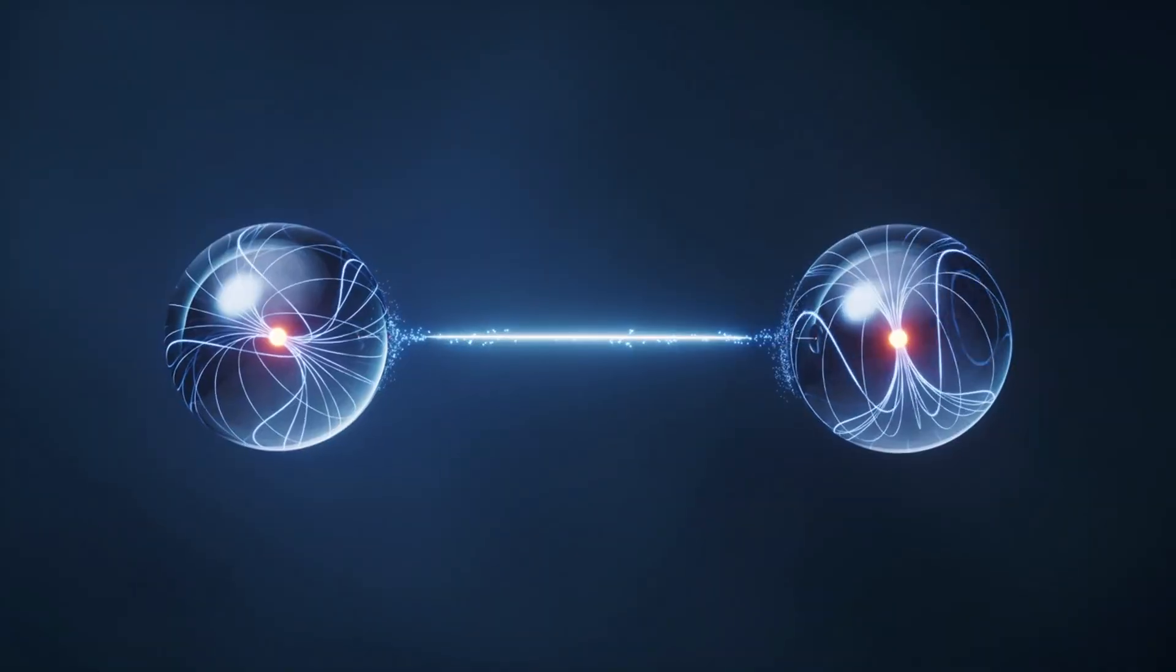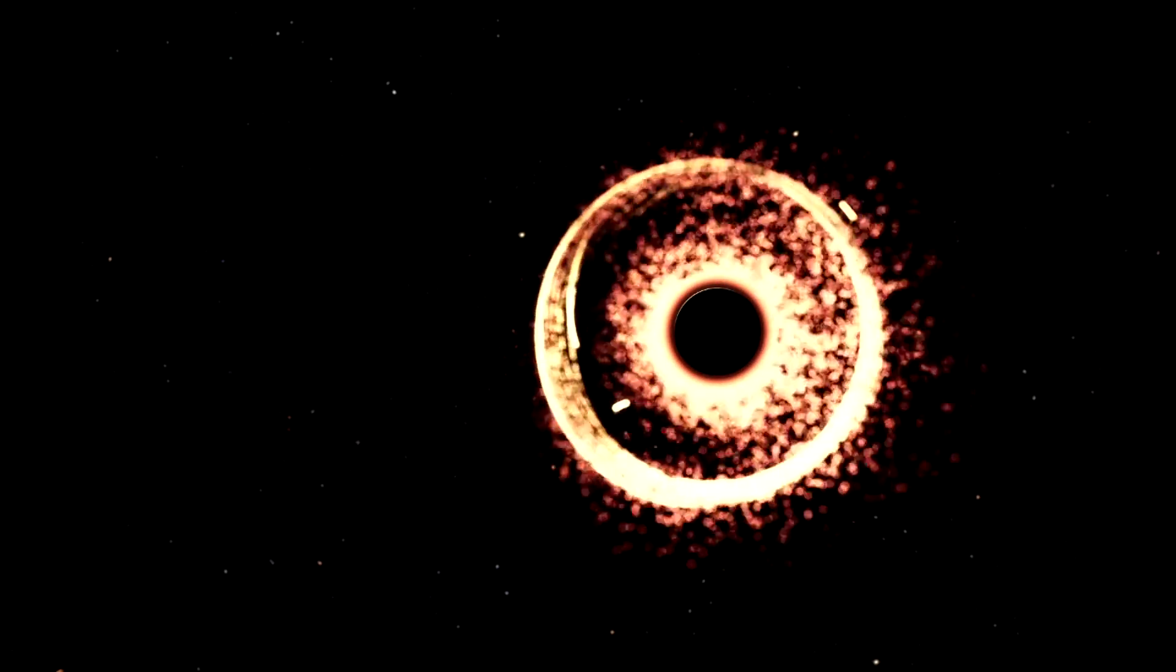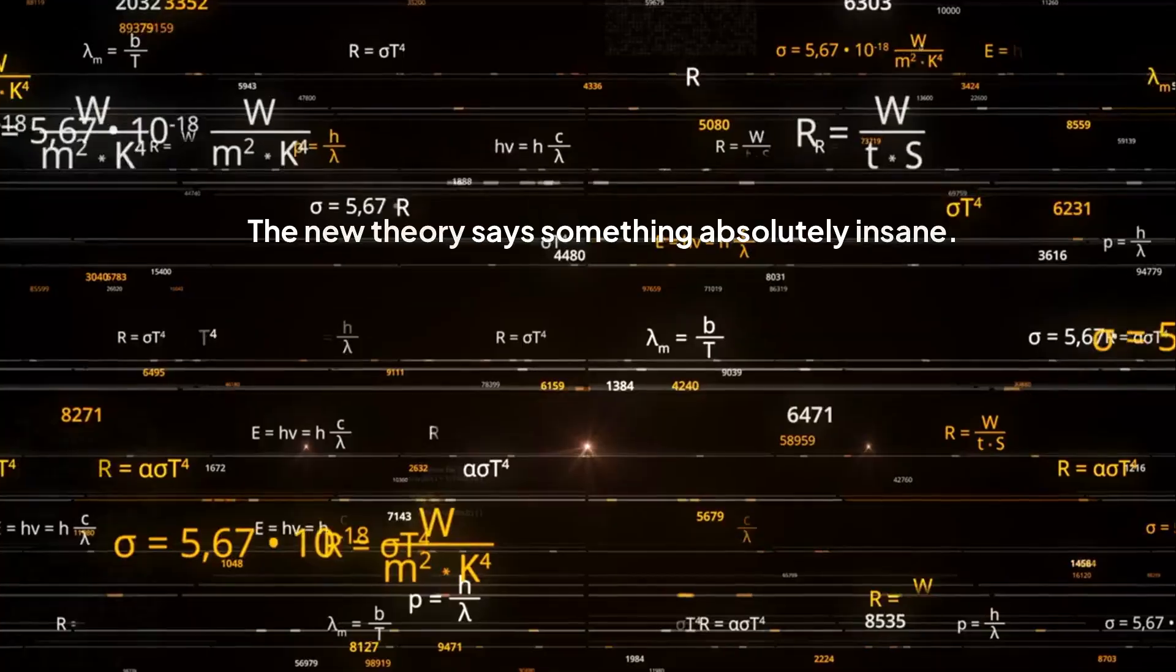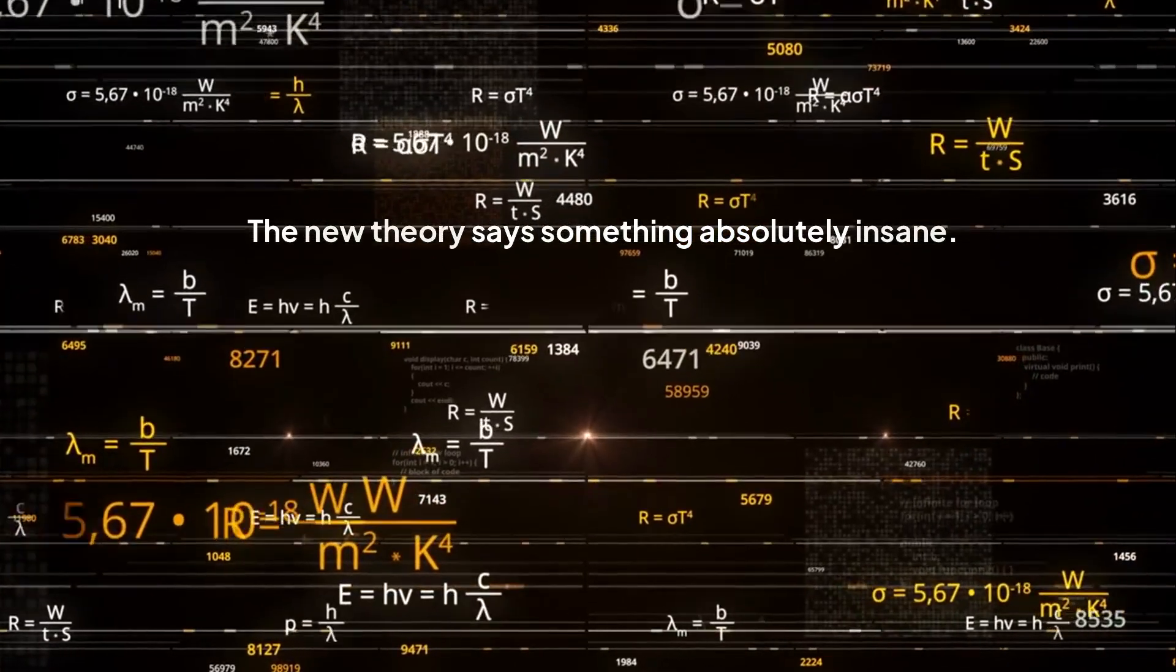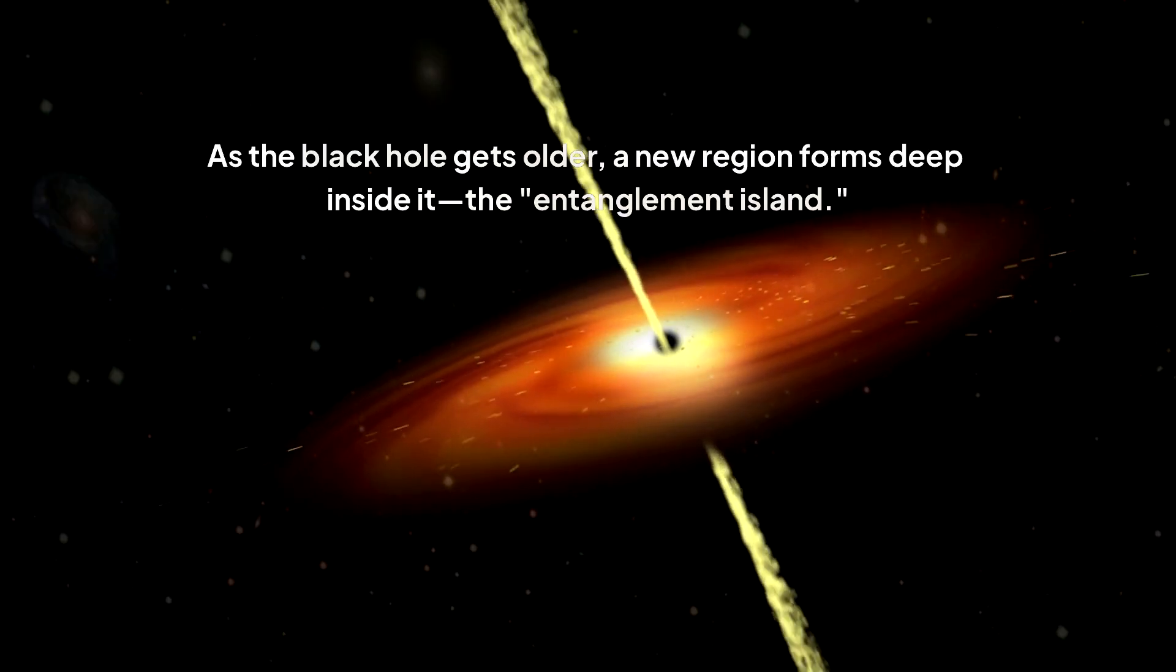Now, back to the black hole. Hawking radiation is made of entangled pairs of particles. One escapes to become the radiation we see, while its partner falls into the black hole, supposedly lost forever. The new theory says something absolutely insane. As the black hole gets older, a new region forms deep inside it, the entanglement island. And here's the twist. Even though this island is inside the black hole, from an information perspective, it's considered part of the outside.